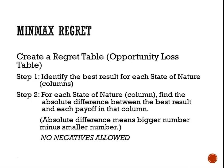There are two steps required to get this process started. First, we must create a regret table. Step one: identify the best result for each state of nature — we're looking at our columns, so we want the best payoff for each state of nature. Step two: for each state of nature, find the absolute difference between the best payoff from that column and every other payoff in the column. Absolute difference means bigger number minus smaller number — no negative signs allowed for a regret table.